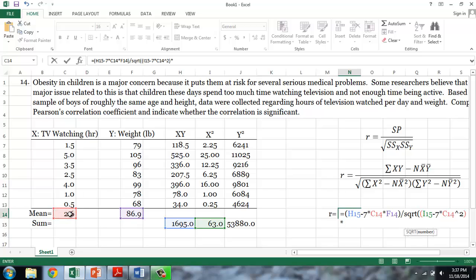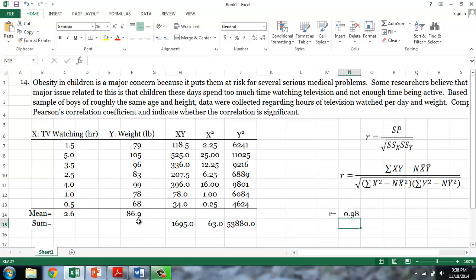the sum of our squared y terms, minus seven, or n, times our average weight, squared. And I'll close that parentheses, and then close the square root parentheses as well. Again, you'll see that we end up with an R value of positive 0.98.